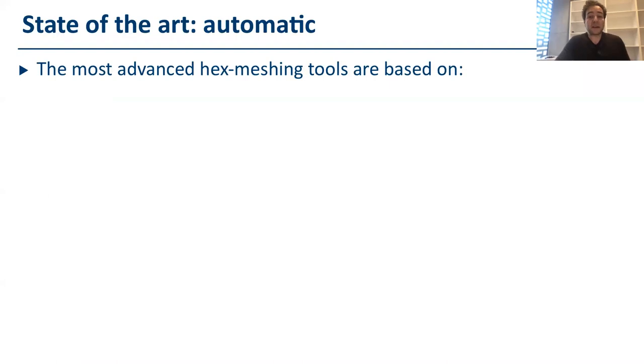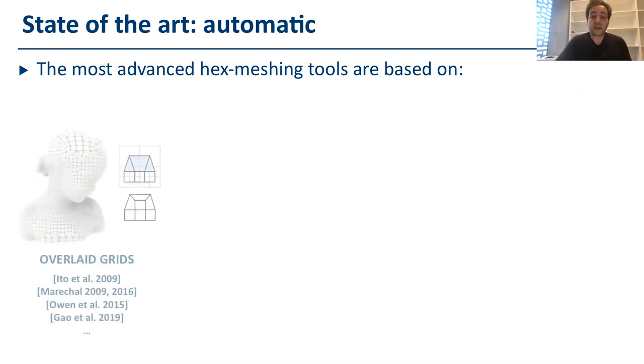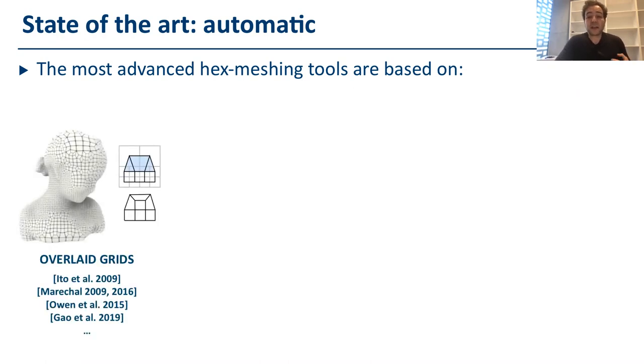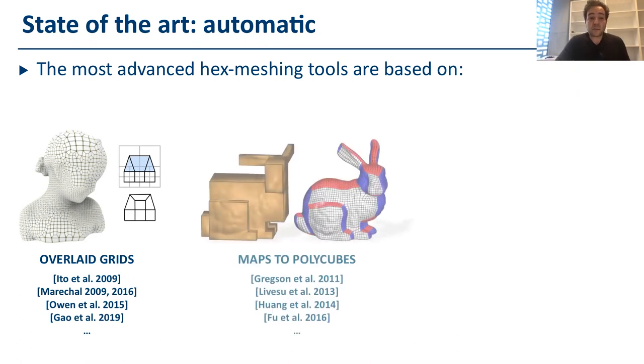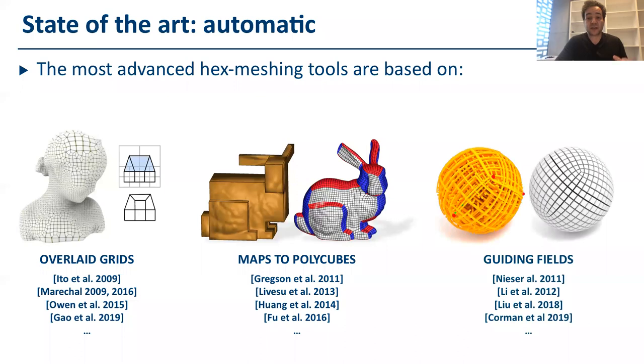In the last years, many techniques have been proposed for hex meshing, but they've been grouped into three main categories. The grid-based methods split the mesh using an axis aligned regular grid. Polycube's methods actually approximate the mesh using a polycube, and recently many methods obtained the hex mesh as a result of a global parameterization guided by a frame field.